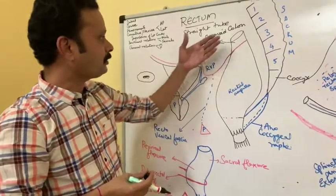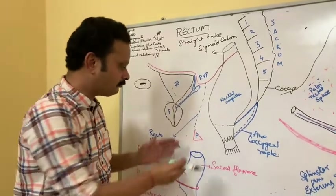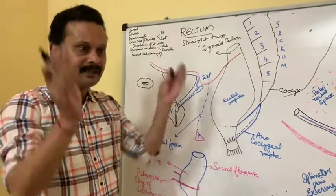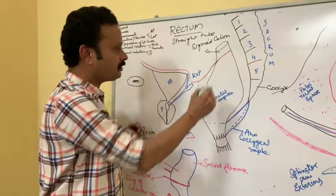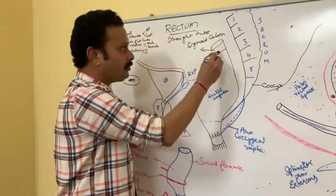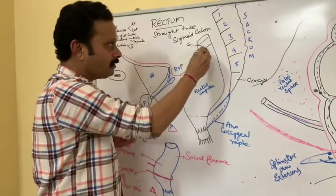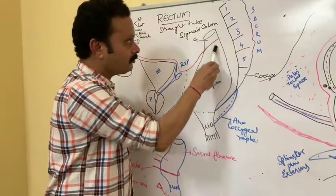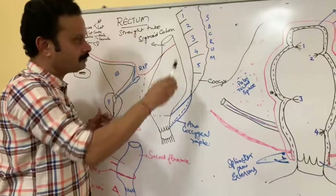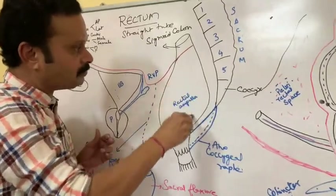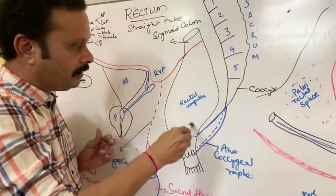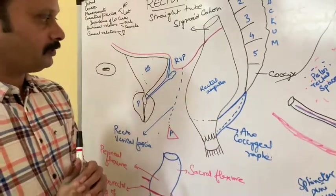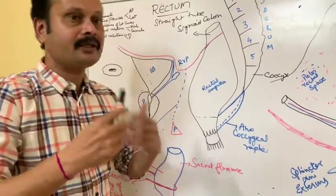Coming to its curvatures, the rectum is not vertically straight. It has anteroposterior curvatures as well as lateral curvatures. The anteroposterior curvatures are: in its upper part it extends downwards and backwards, coinciding with the lower part of the sacrum; in the middle part it is almost vertically straight; and in the lower part it abruptly turns downwards and backwards. This is the anteroposterior curvature.